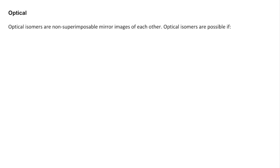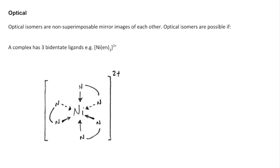So optical now. Optical isomers are non-superimposable mirror images of each other, and there's three scenarios where you can get optical isomerism in complexes. The first one we'll look at is when a complex has three bidentate ligands. For example, nickel with three ethylenediamines, 2+. There's one of the isomers. The mirror image of that is non-superimposable, and so they are optical.